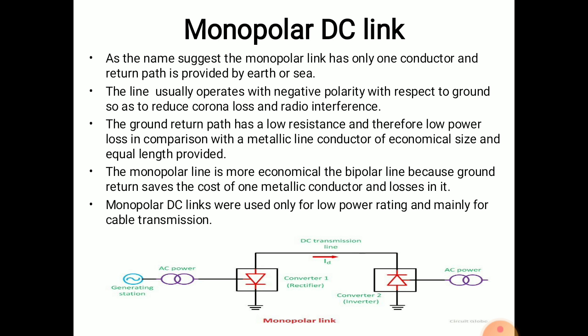Monopolar DC Link: As the name suggests, the monopolar link has only one conductor, and the return path is provided by permanent earth or sea. The line usually operates with negative polarity with respect to ground, so as to reduce corona loss and radio interference. The earth electrodes are designed for continuous rated current operation and for any overload capacity required in the specific case.